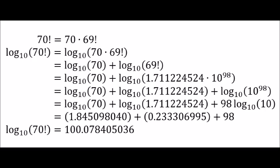Yes. We can use logarithms to help us out. Pause the video and follow through line by line to make sure you understand the process. We convert multiplication to addition, and the 98 in the exponent moves out front. So the base 10 logarithm of 70 factorial is 100.078, as seen in the last line.